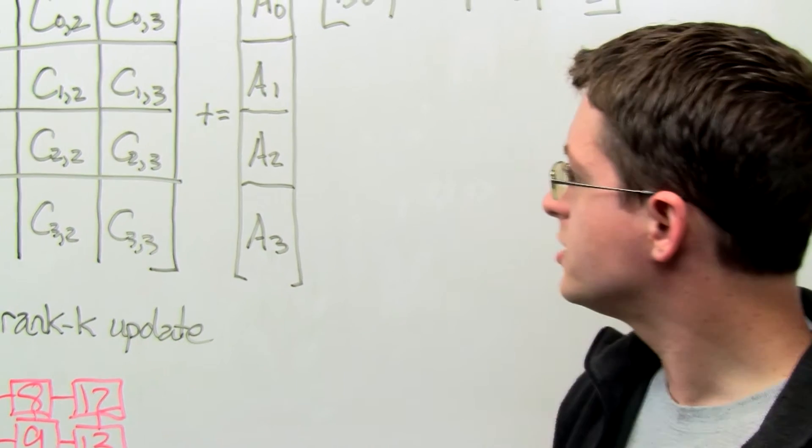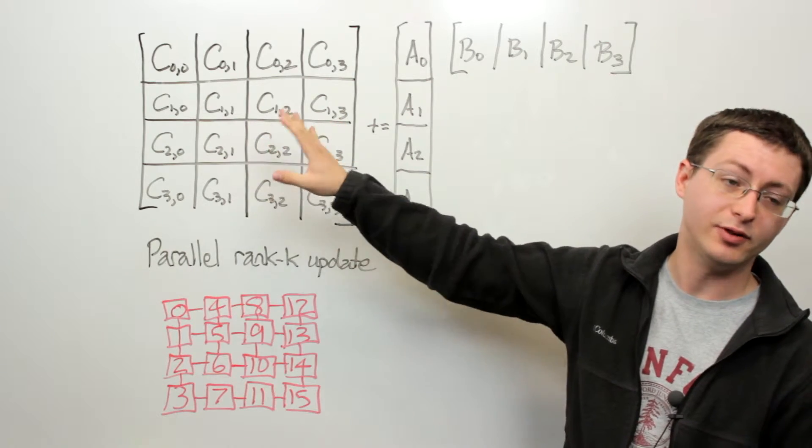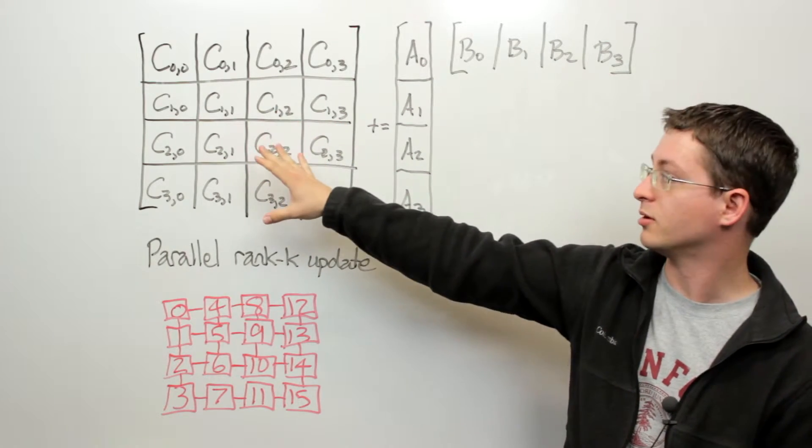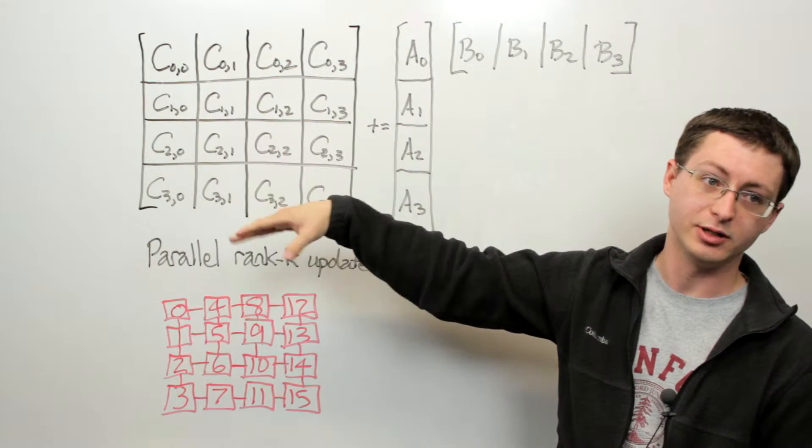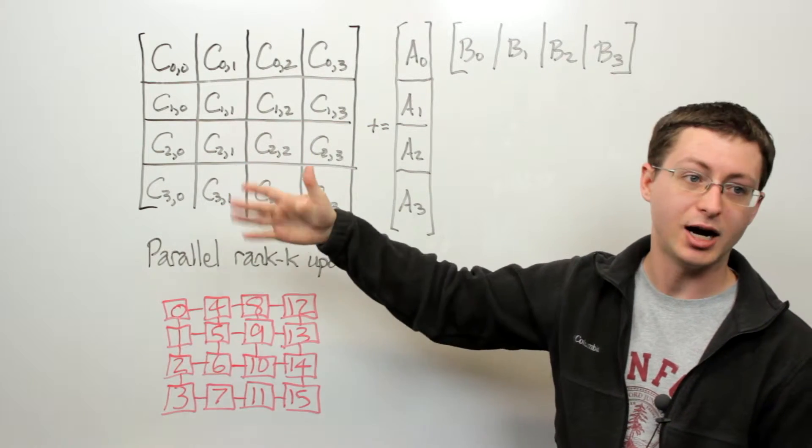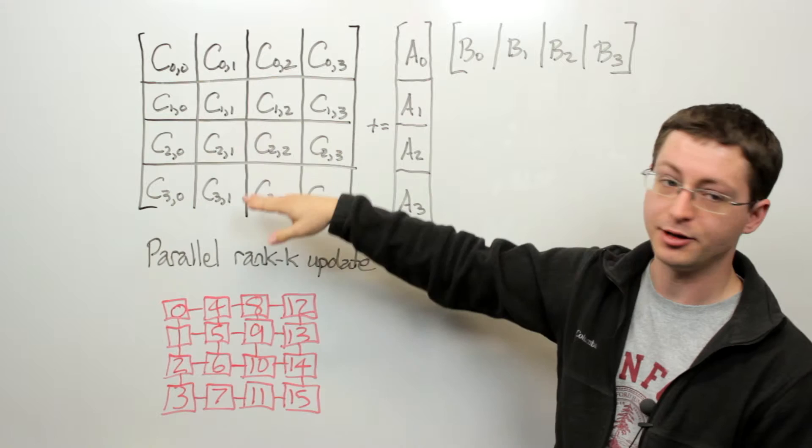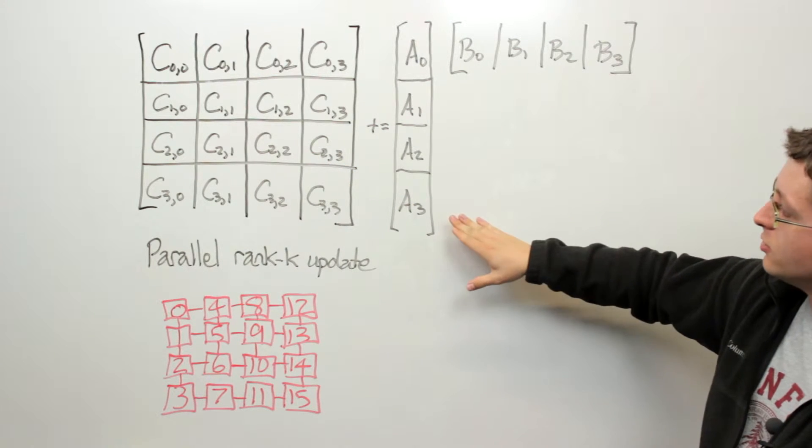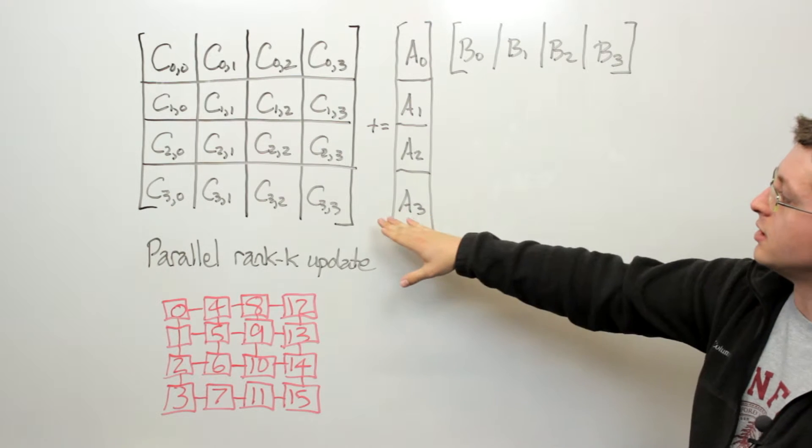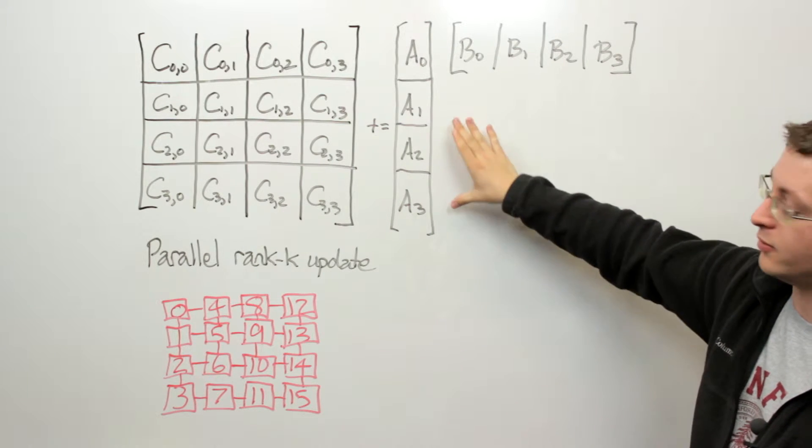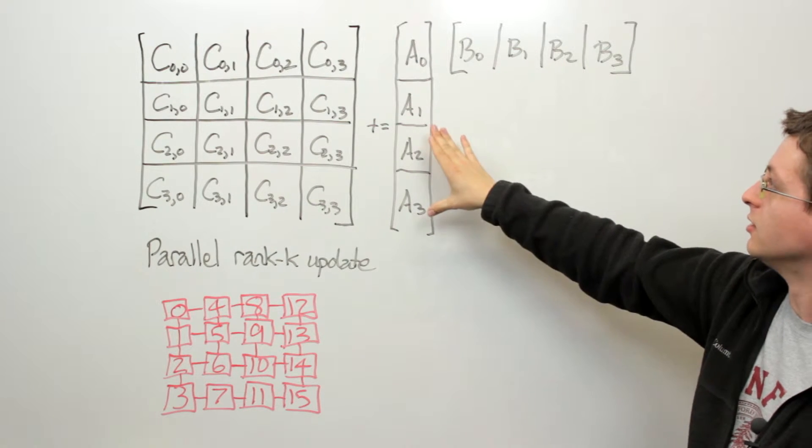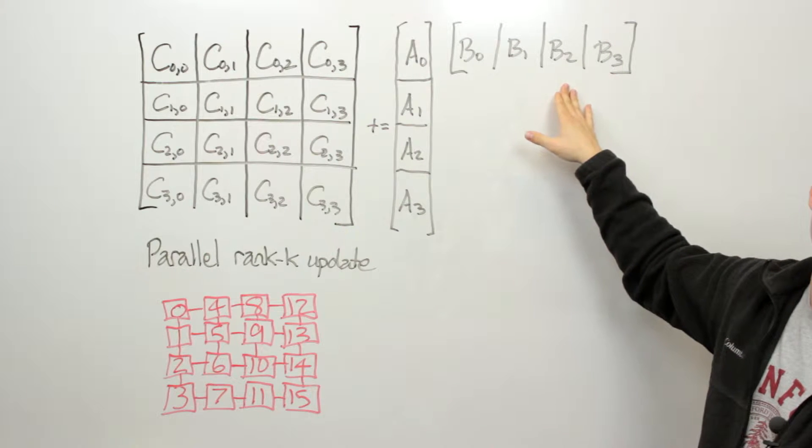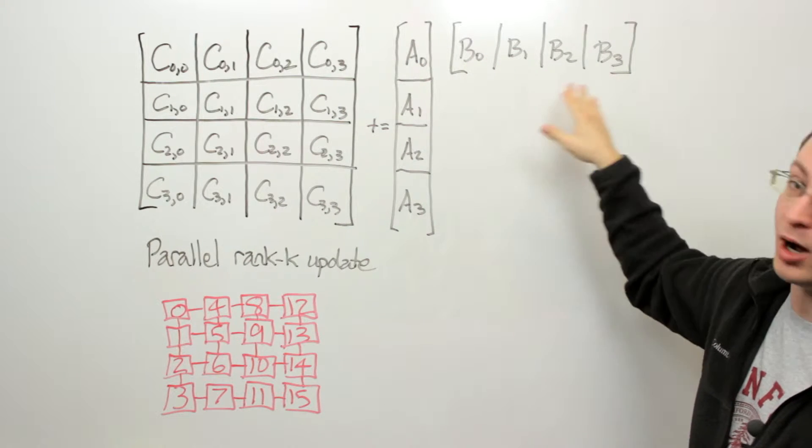So suppose that we have a matrix C that we've divided up into a four by four set of submatrices which I've labeled C sub ij for the ith row in the jth block column. What we'd like to do is update C with the product of tall skinny matrix A multiplied by a very short and wide matrix B.